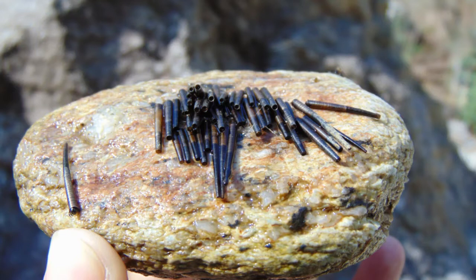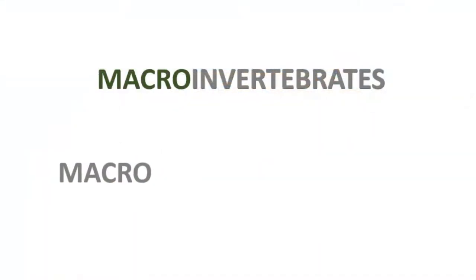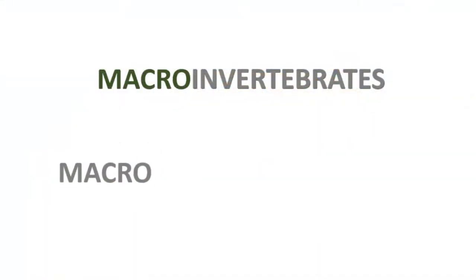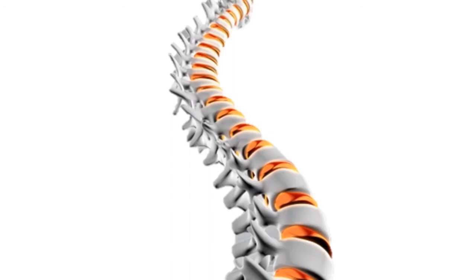In biological terms, these are called macroinvertebrates. They are invertebrates — they do not have a backbone. Although they are small, macroinvertebrates are very important indicators of whether our water is good or not.